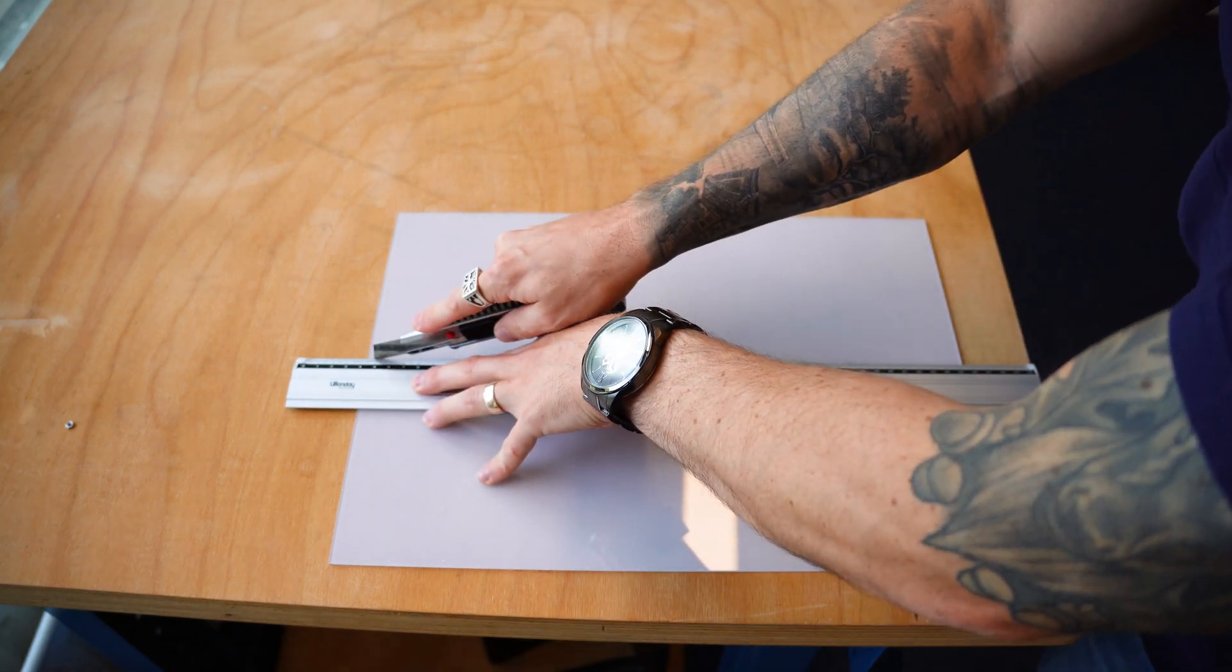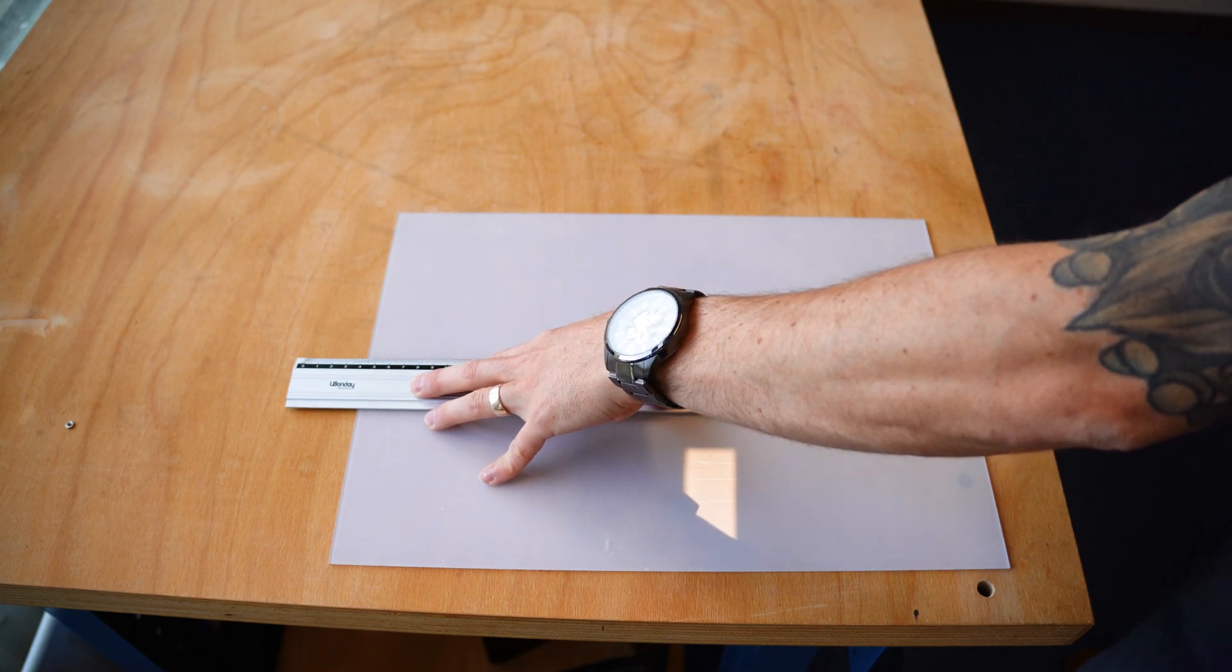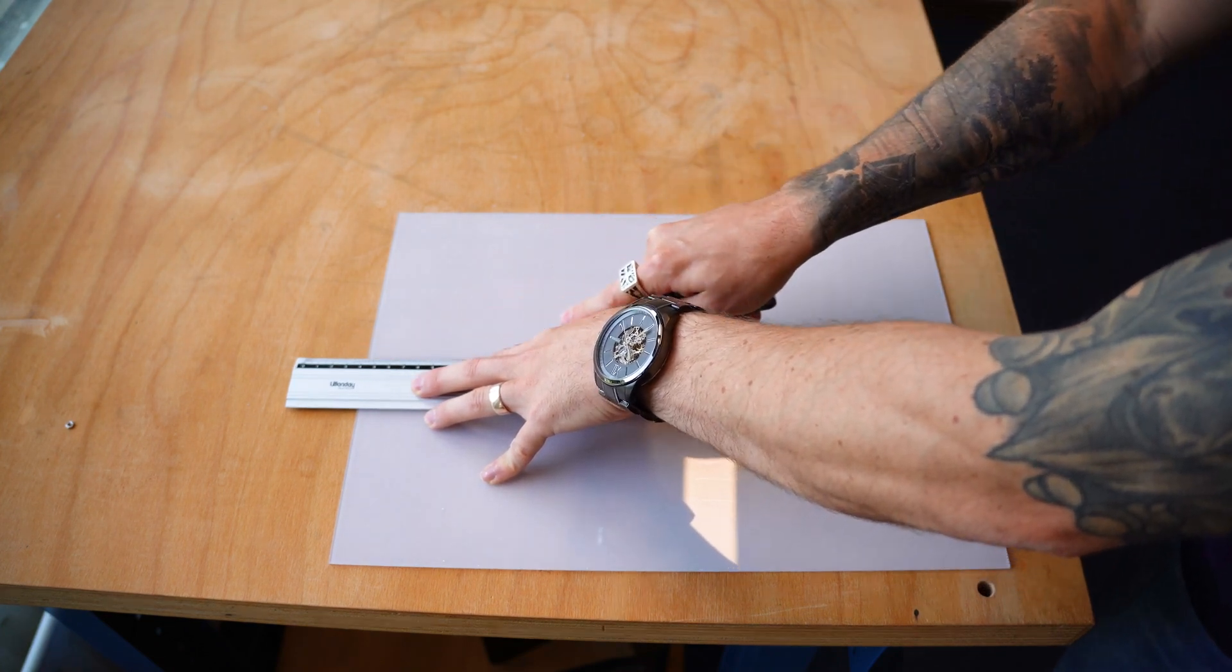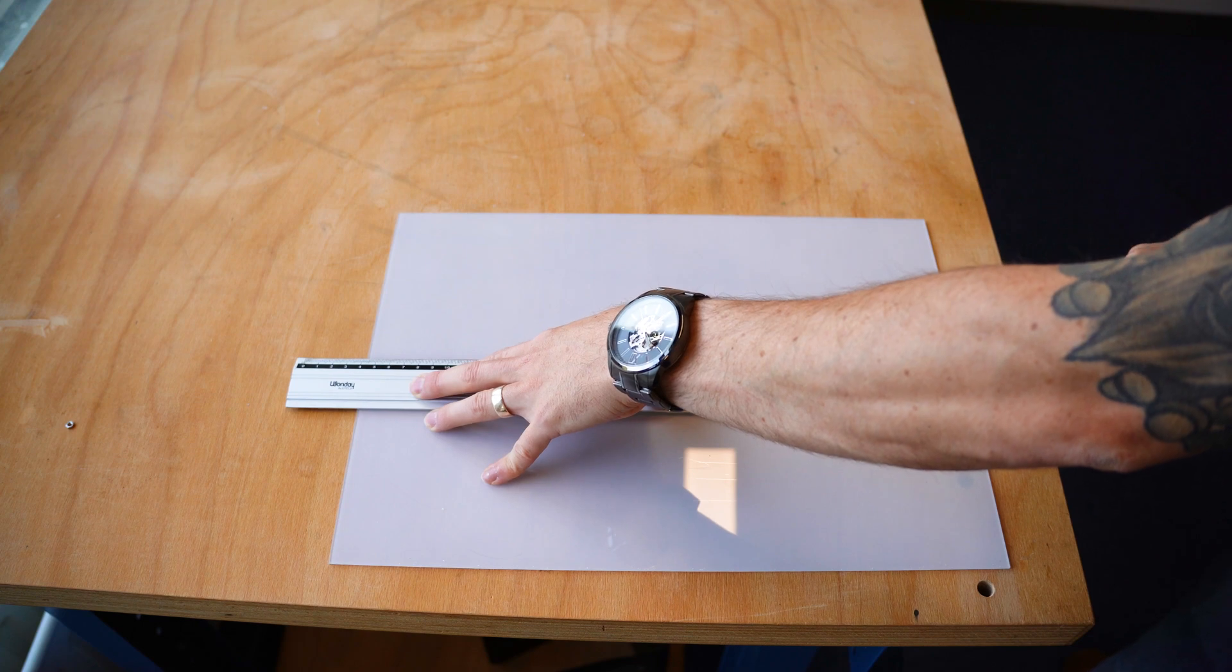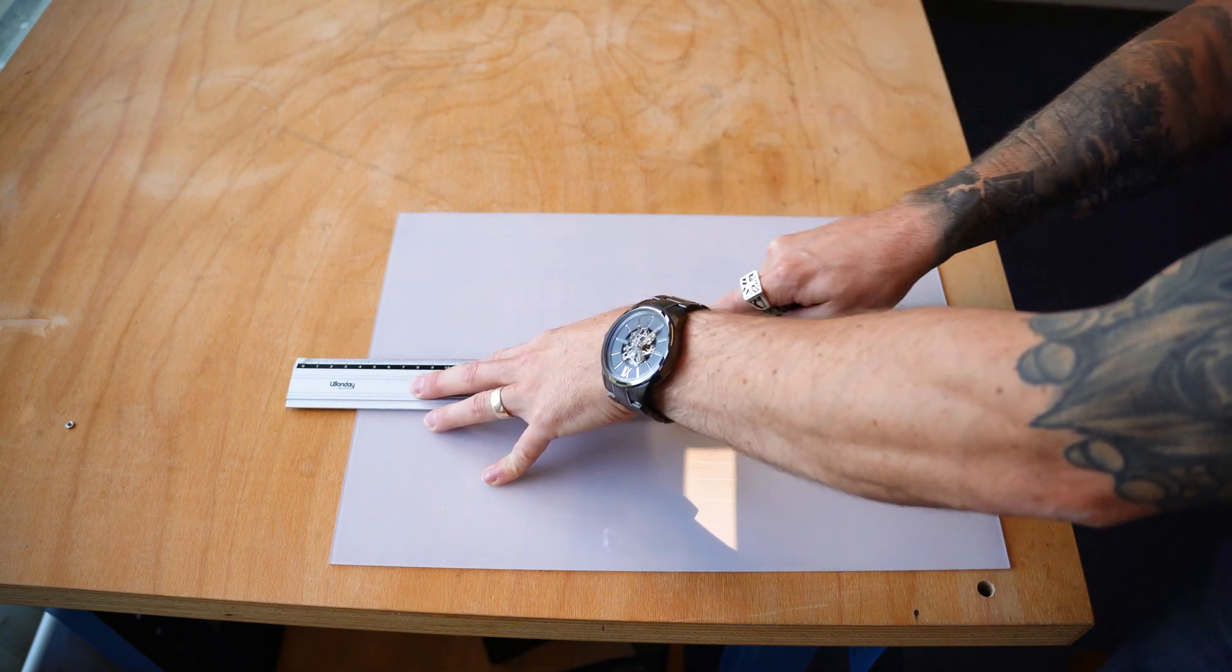I'm going to go ahead and score this a few more times lightly, and then we'll go through and do a rather hard score at the end. And effectively what we're doing is we are making a break line on this piece of polycarbonate.